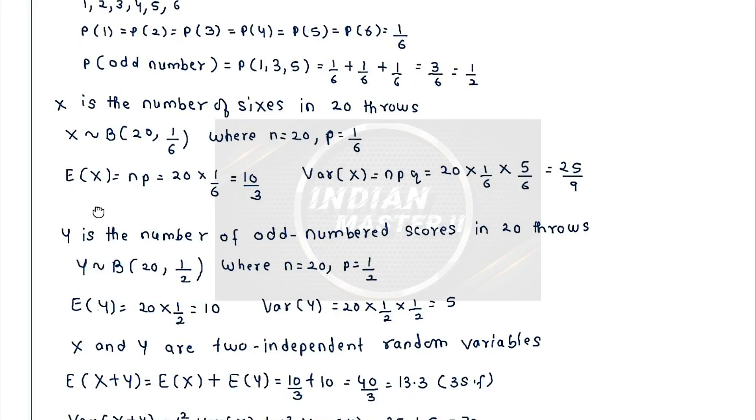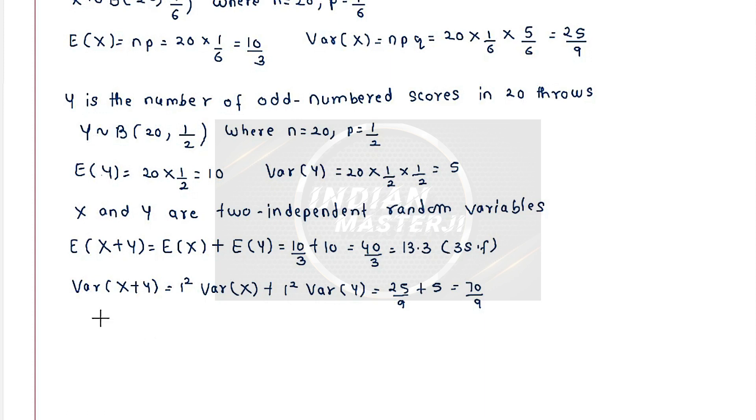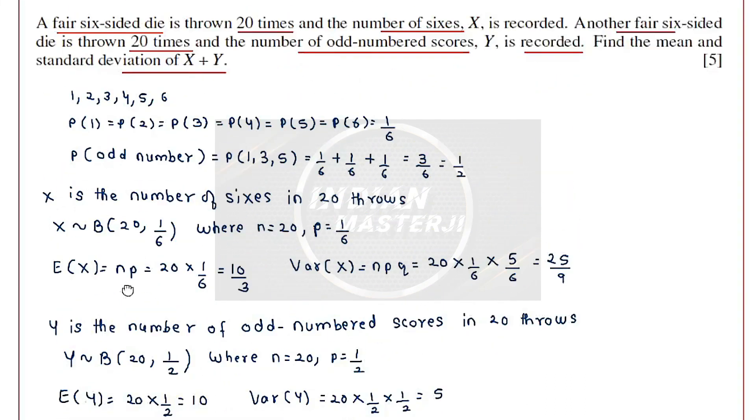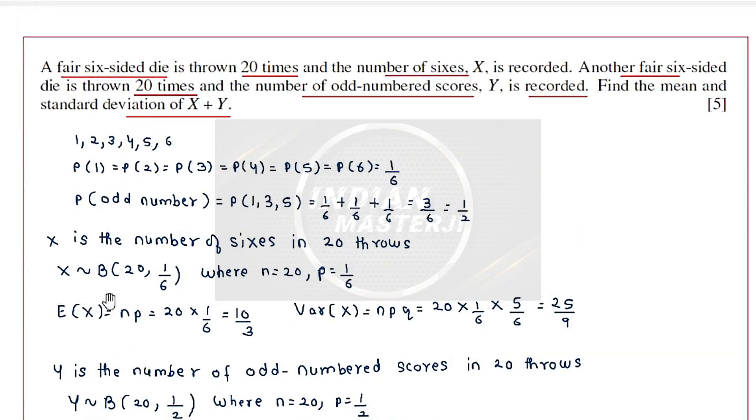The variance we got, they are asking for the standard deviation. So the standard deviation of X plus Y will be equal to square root of 70 by 9. That will be equal to 2.79 in terms of 3 significant figures. So this answers the standard deviation part also.